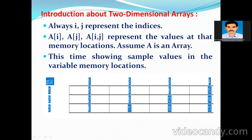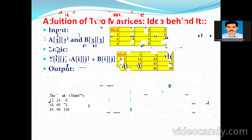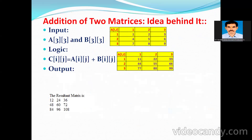For example, at location (1,1) the value will be 3, at location (1,2) the value will be 8, and at location (1,3) the value will be 6. In this way, values are stored in the array.